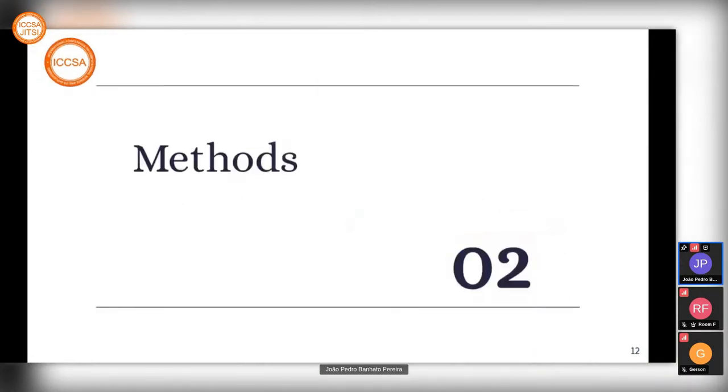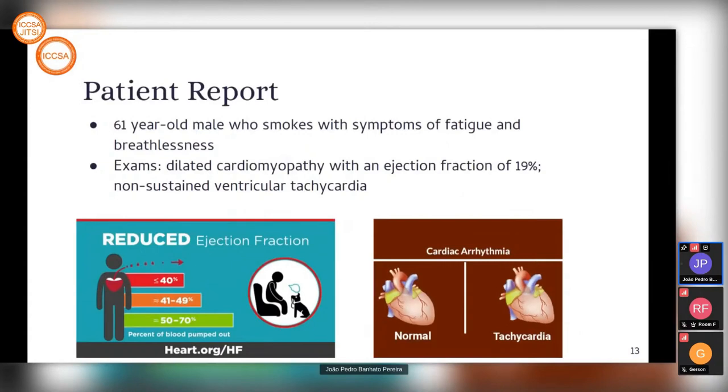Our patient was a 61-year-old male who smokes, with symptoms of fatigue and breathlessness when lying down. He did exams that showed dilated cardiomyopathy with an ejection fraction of 19%. Anything below 40% is considered reduced ejection fraction. He also showed non-sustained ventricular tachycardia, which is when the heart has a very fast heartbeat.